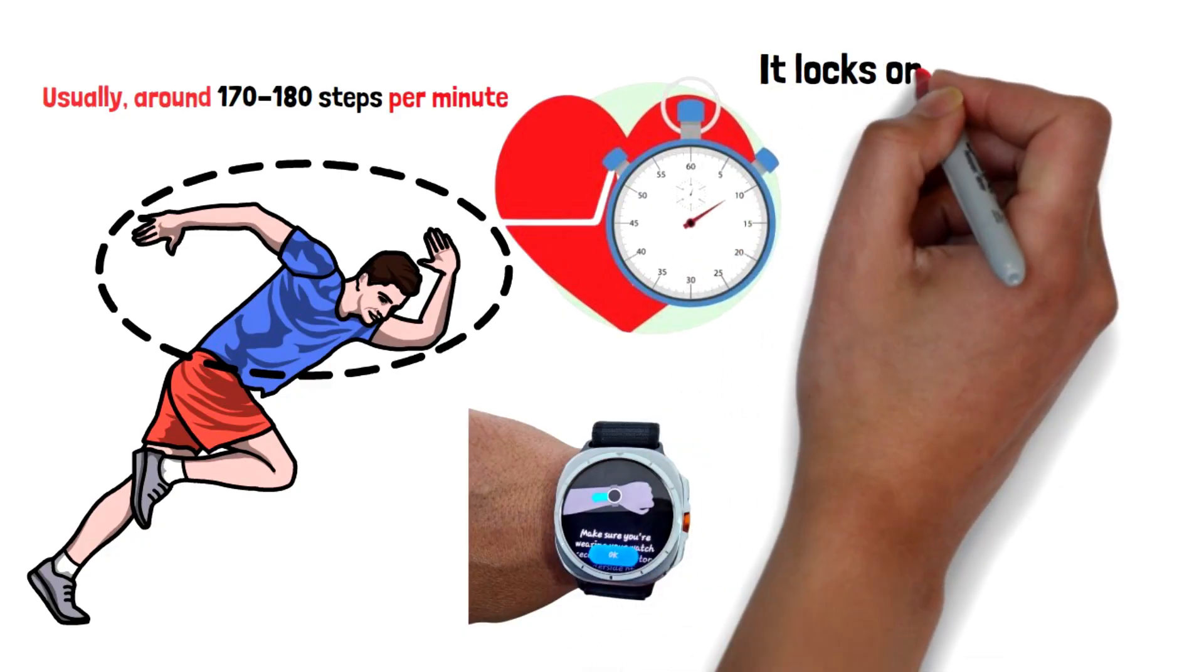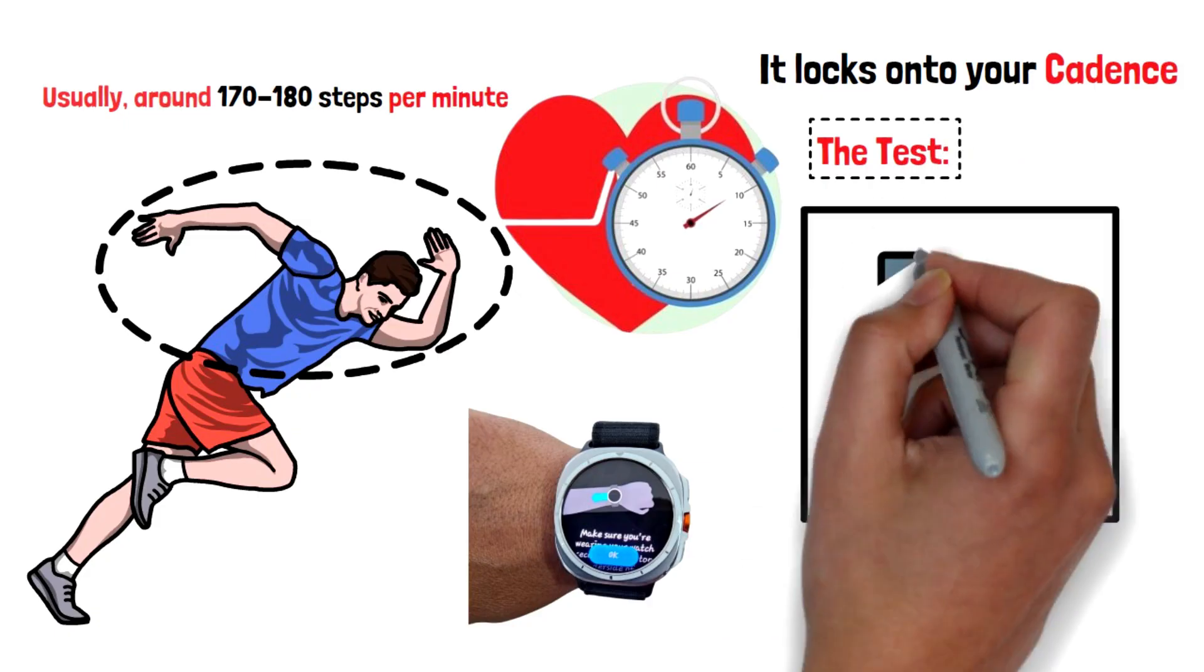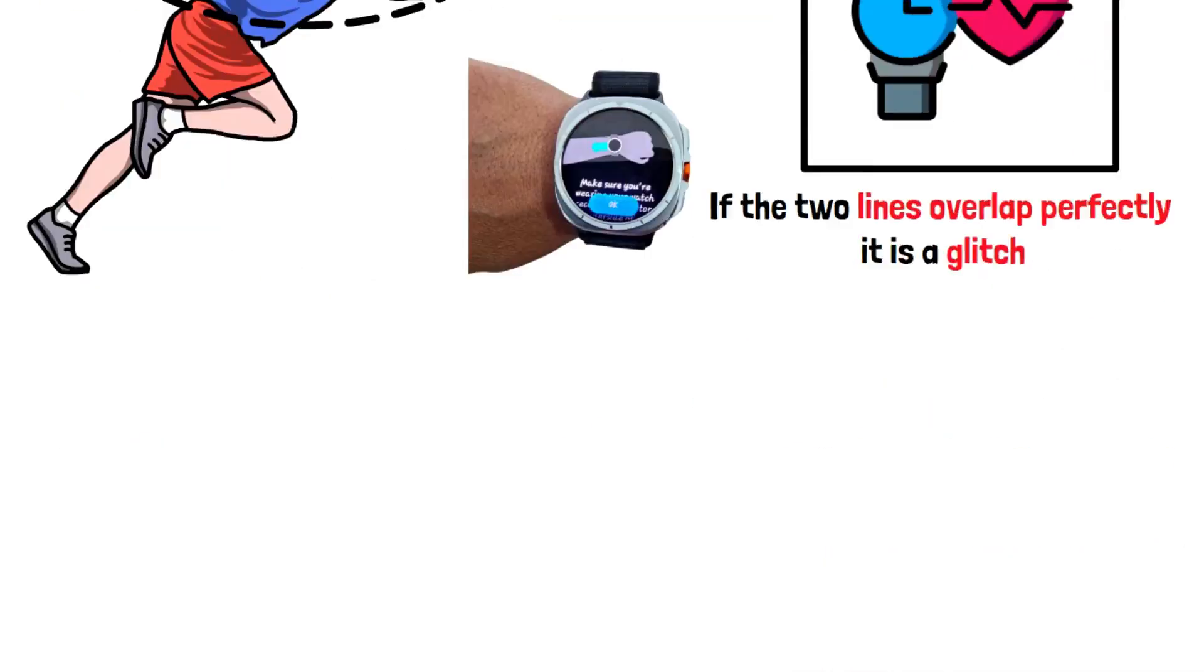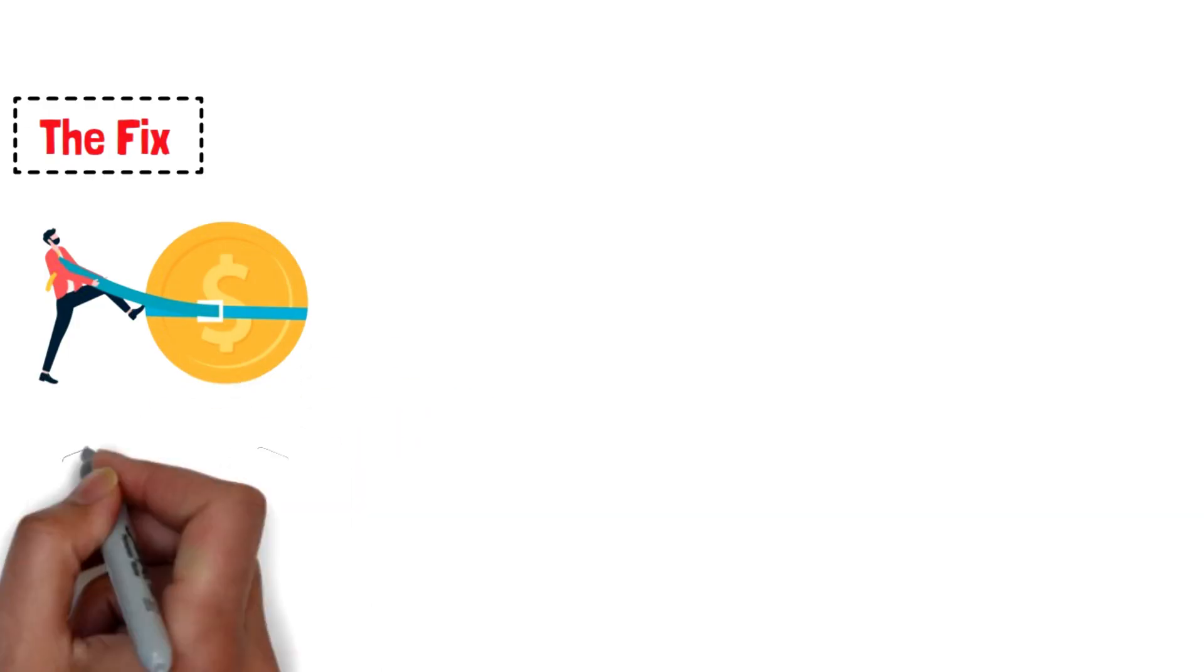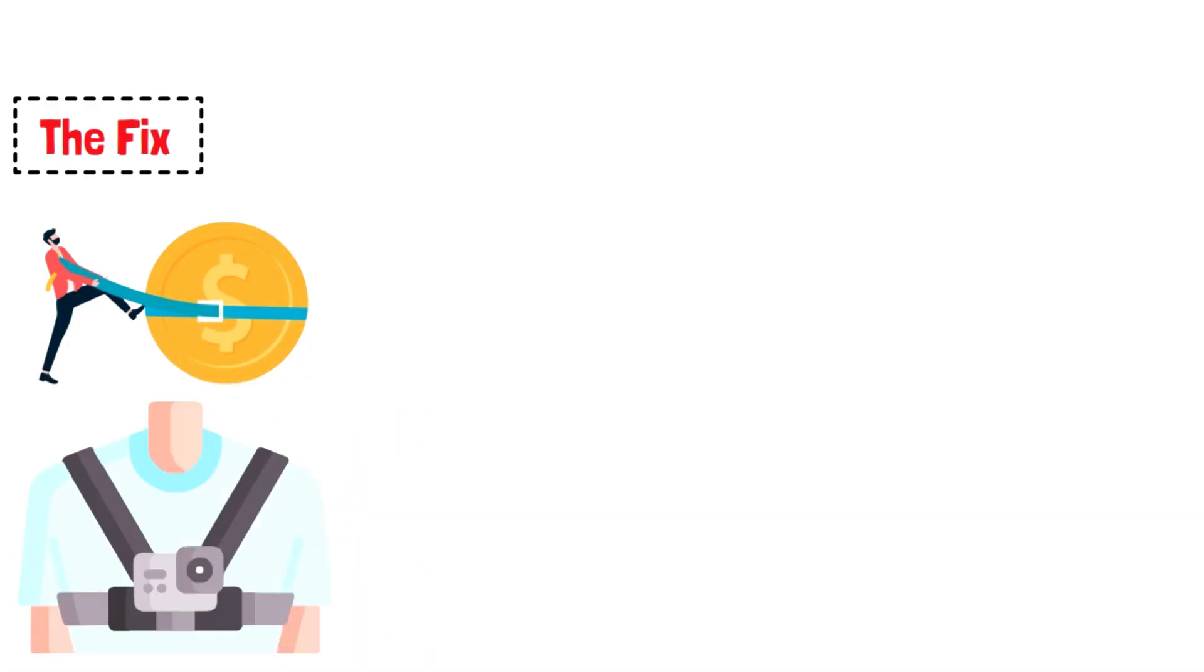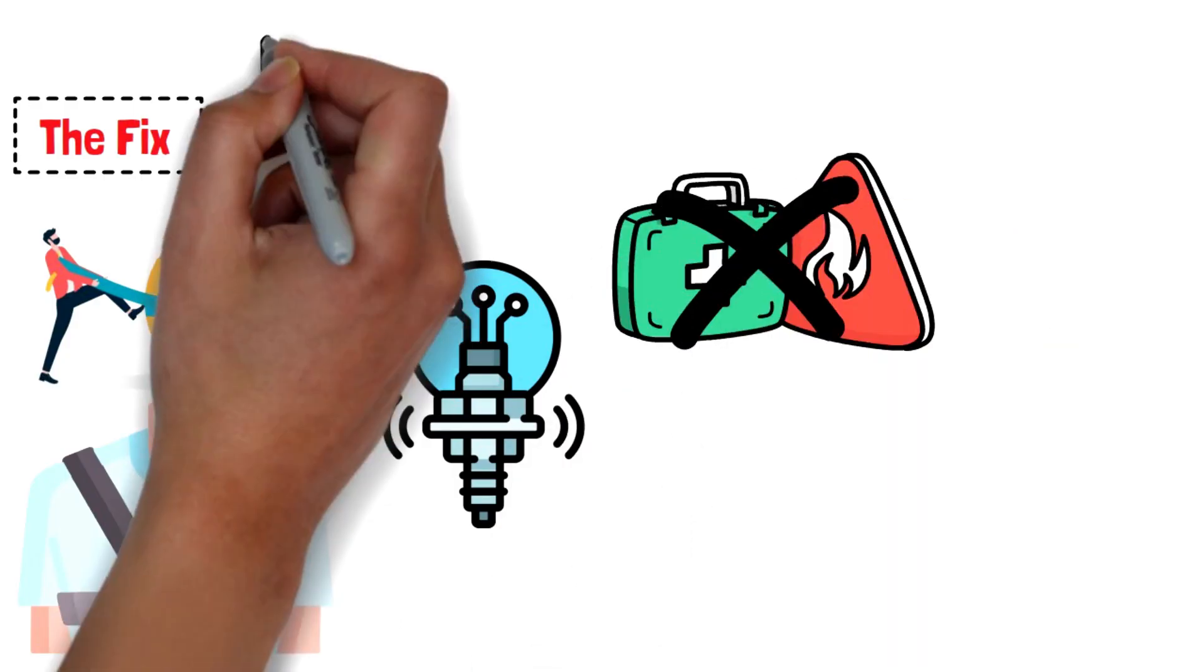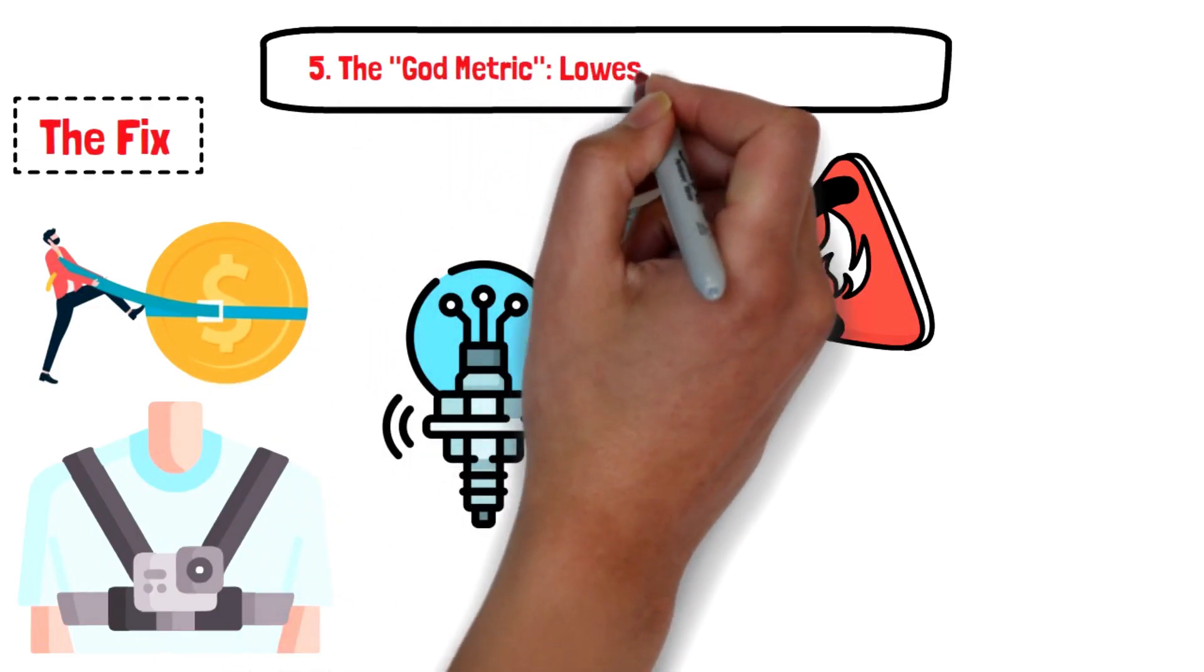The test: next time you see a crazy high heart rate, check your cadence graph. If the two lines overlap perfectly, it's a glitch. The fix: tighten the strap until it leaves a mark, or buy a chest strap. Optical sensors are convenient, but they're not medical grade.